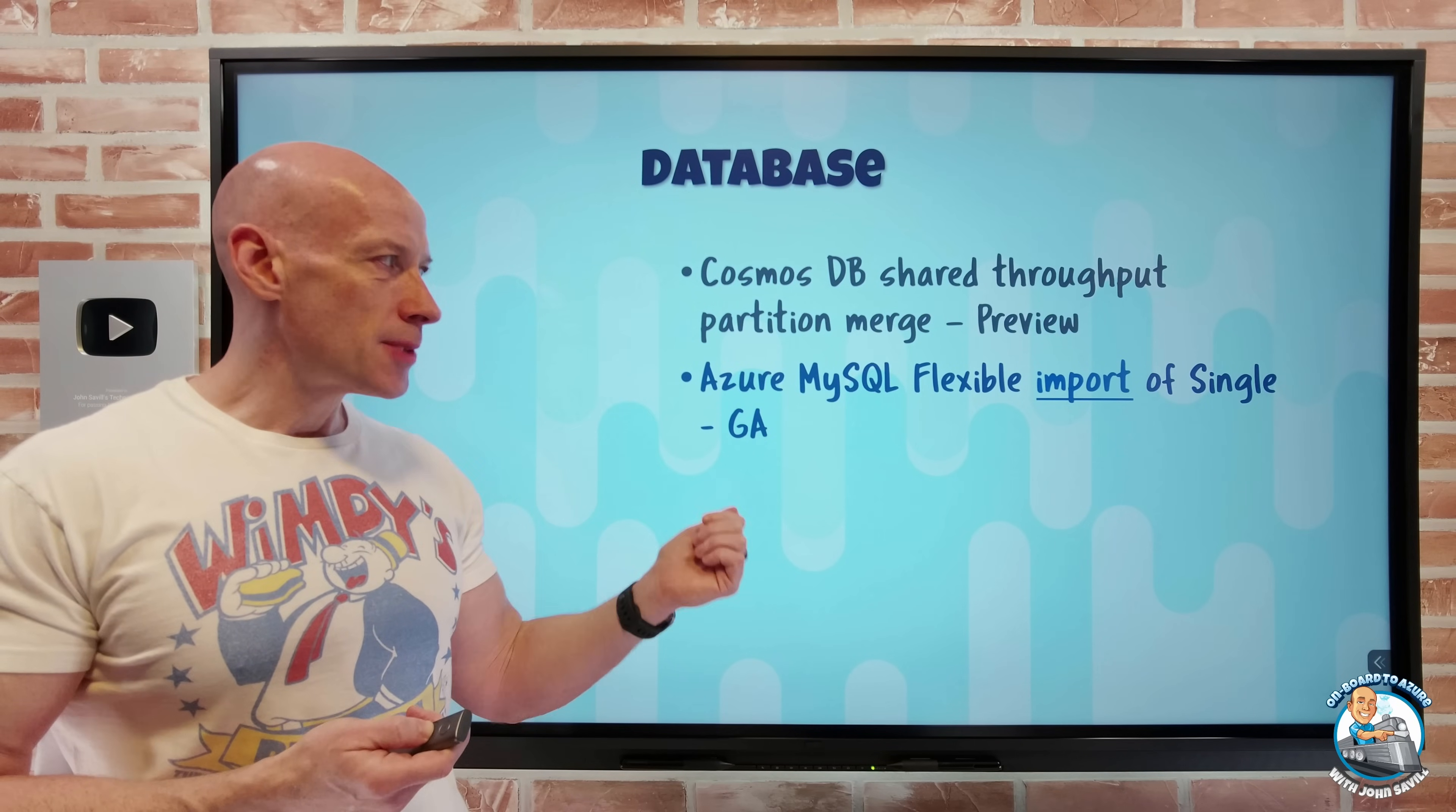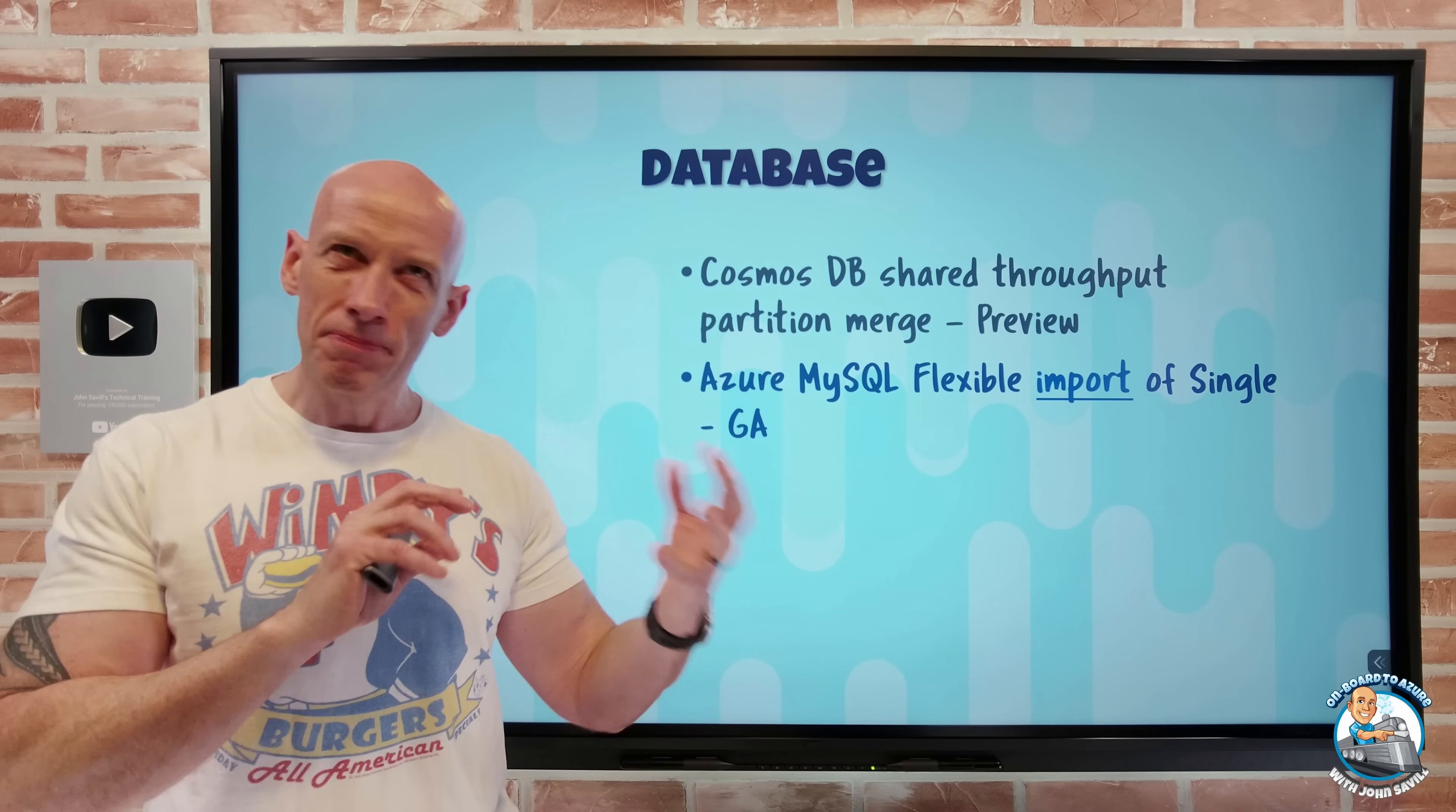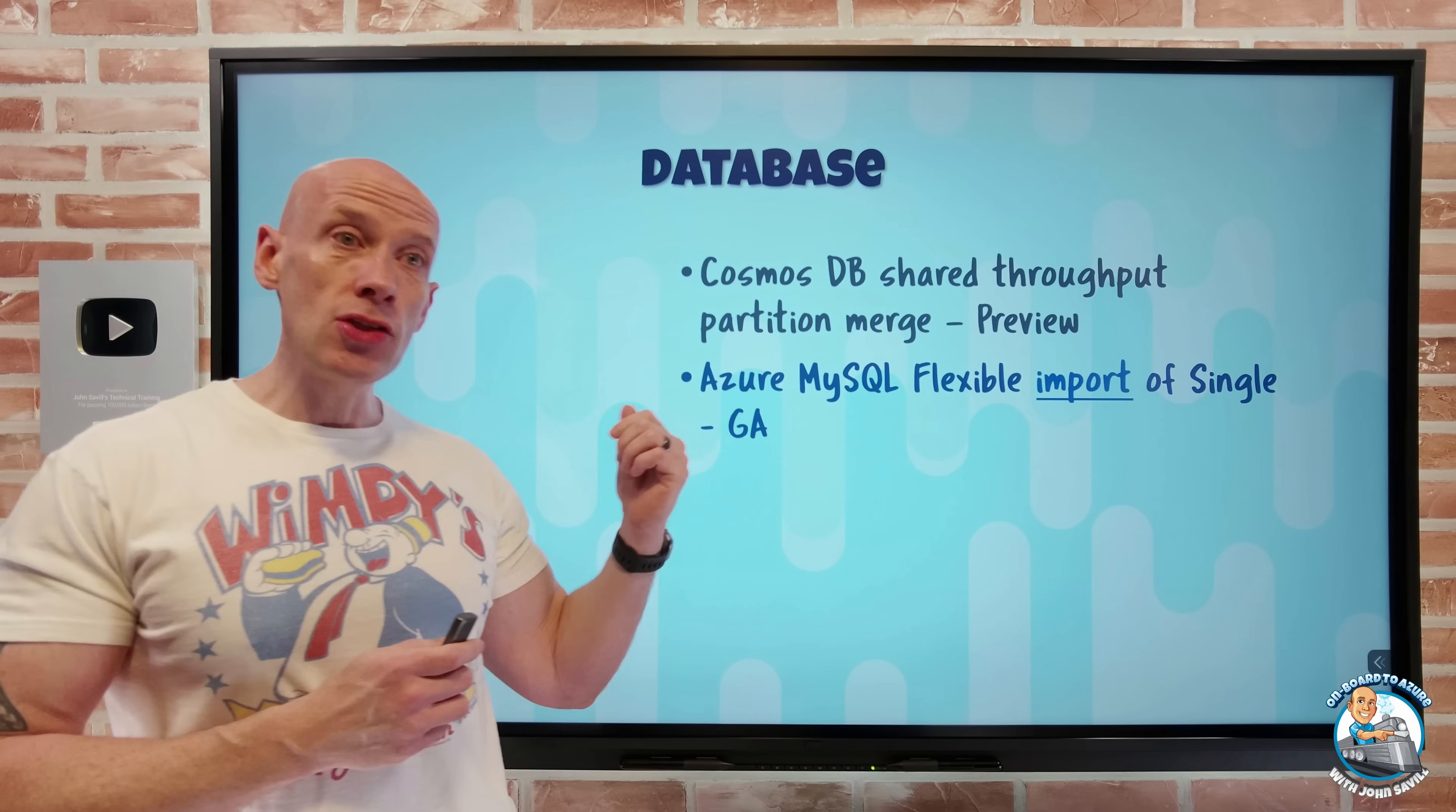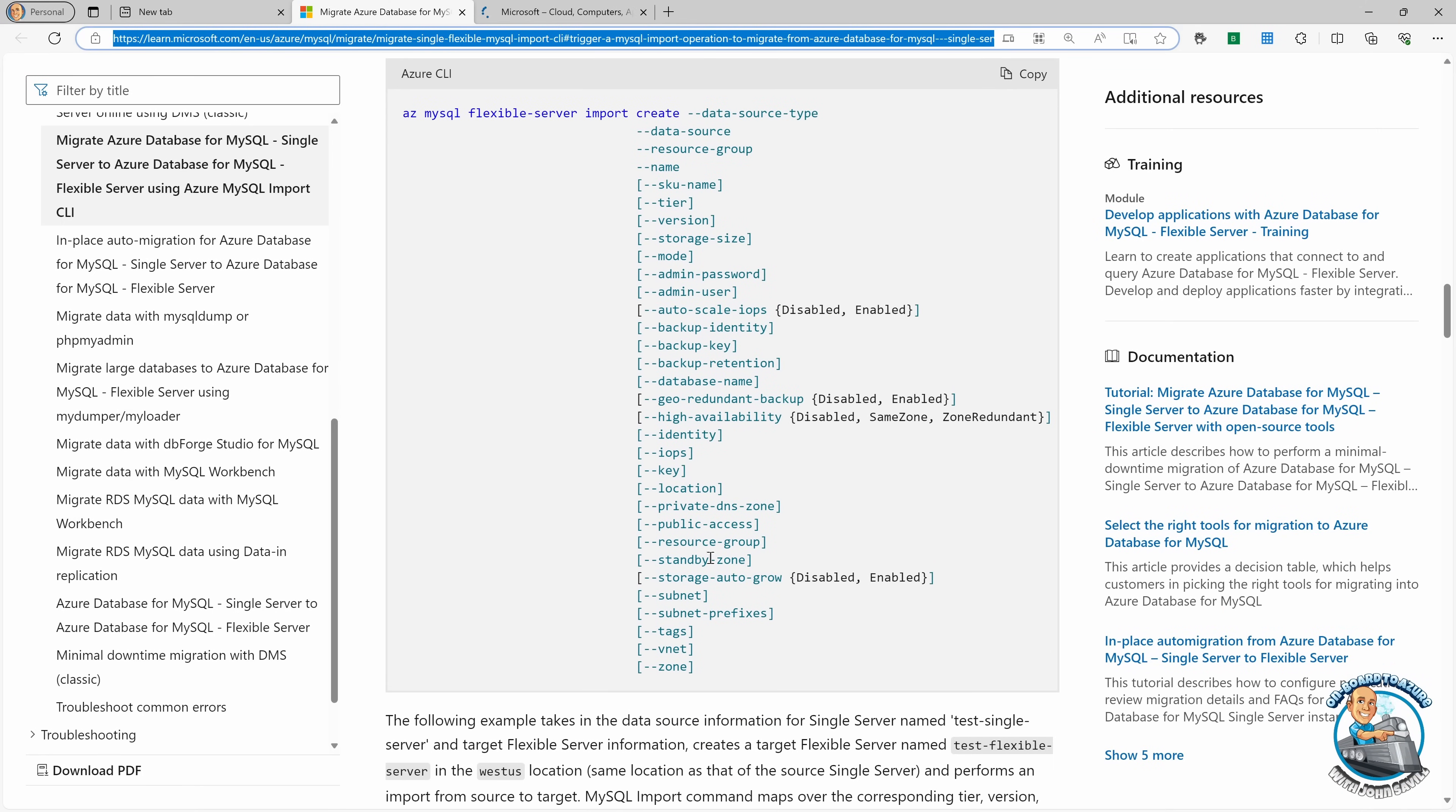And then Azure MySQL Flexible now has the import from MySQL single that is GA. So remember single is that old model, both MySQL and Postgres initially was that single server model, which was based on a proprietary container type technology. Flexible is more VM based. I get better high availability, more customization, better availability zone use, a whole set of improvements on that. So now it makes it really easy to just move from single to flexible. And you can do it with a single command. The only reason I'm smiling a little bit is, let's see if we can actually look at this quick. If you look at the single command, it's fantastic how big this single command is. But it is a single command.